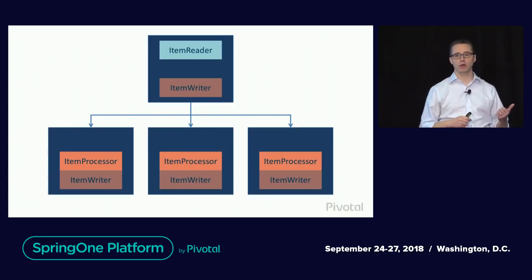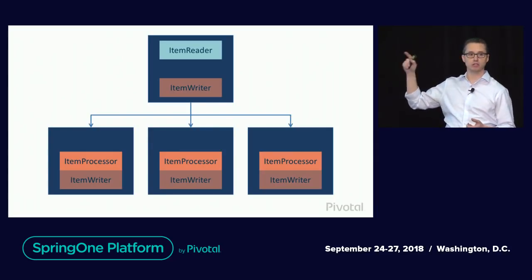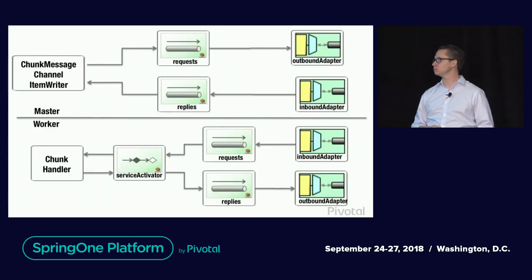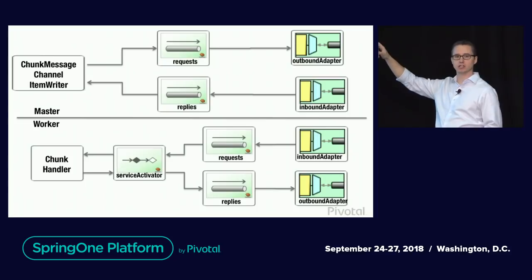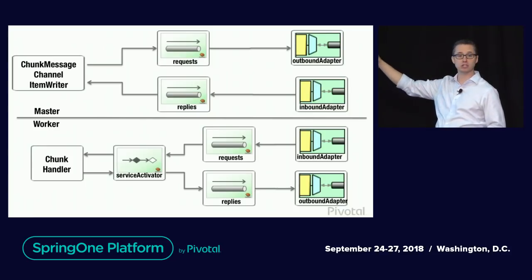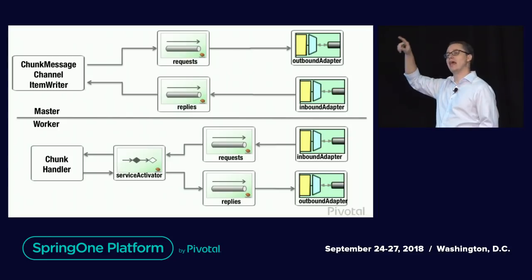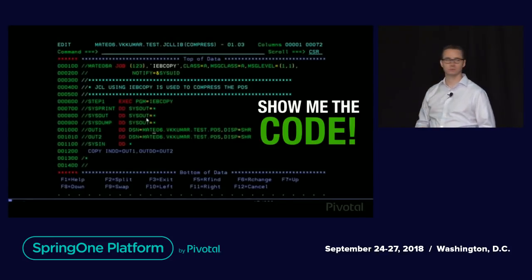Unlike remote partitioning where you don't have to use durable middleware — because the job repository takes care of lost messages, deduping, etc. — in remote chunking, because you're sending the actual data over the wire, you do need durable messaging middleware between the master and the worker. The flow is similar: chunk messaging channel item writer sends to an outbound adapter, over Rabbit, inbound adapter, service activator. The difference is instead of sending metadata, we're sending actual data. There's no aggregation on the reply side on the master because all writing in our case is done at the worker level.